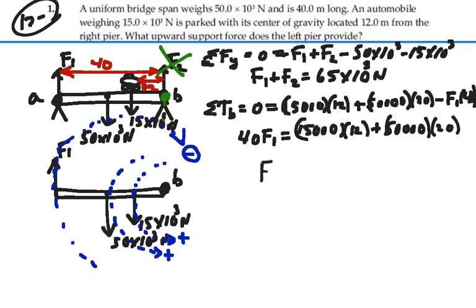So F1 is going to equal all that stuff, 15,000 times 12 plus 50,000 times 20, which is 1,180,000.